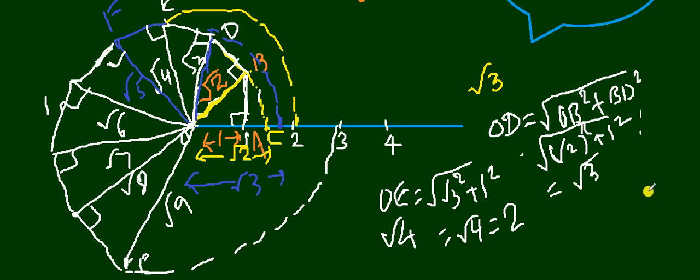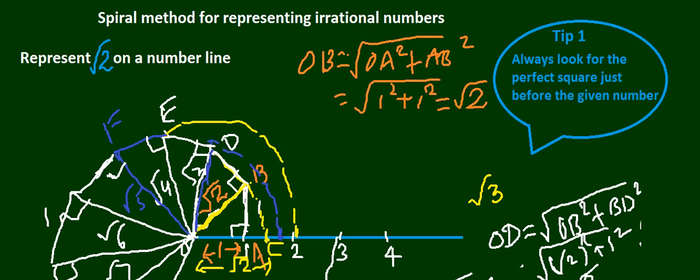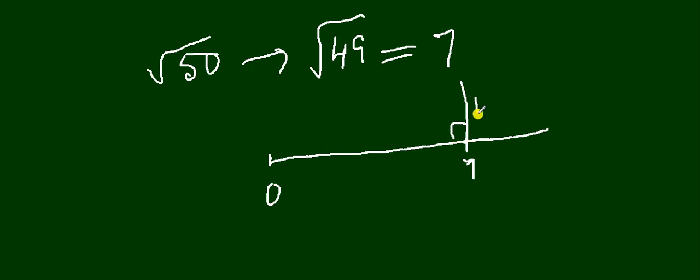And can you do it for bigger numbers? Yes, definitely you can use it for bigger numbers. For example, if I am given to find root 50, I do not have to start from 1 and spend hours together to do this. As I told you the tip: always look for the perfect square just before the given number. Which is the perfect square just before this number? It is 49. And what is square root of 49? It is equal to 7. So what you will do is: you can have your 0 here and 7 somewhere here. So your starting point will be 7. Again, at 7 you will drop 1 unit perpendicular—remember, it is always 1 unit—and then join it and then use this part as your radius to drop in the arc, and this point will correspond to your root 50.